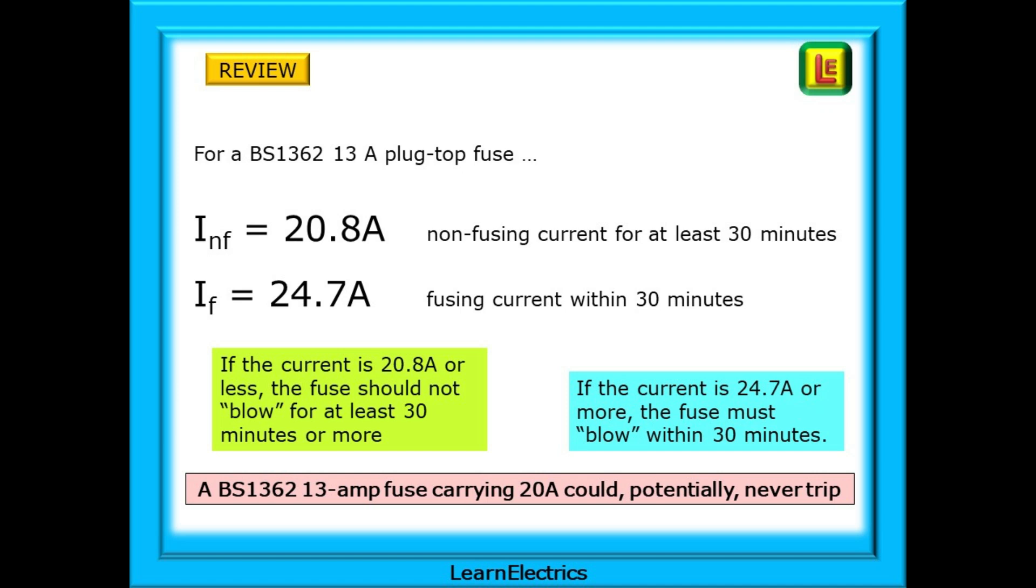This means that a BS1362 13 amp fuse carrying 20 amps could potentially never trip. How many times have we seen 4 sockets extension leads protected by a 13 amp fuse and very obviously overloaded? Or extension leads in extension leads? For the customer if the fuse doesn't blow then everything must be alright which we now know is not the case.